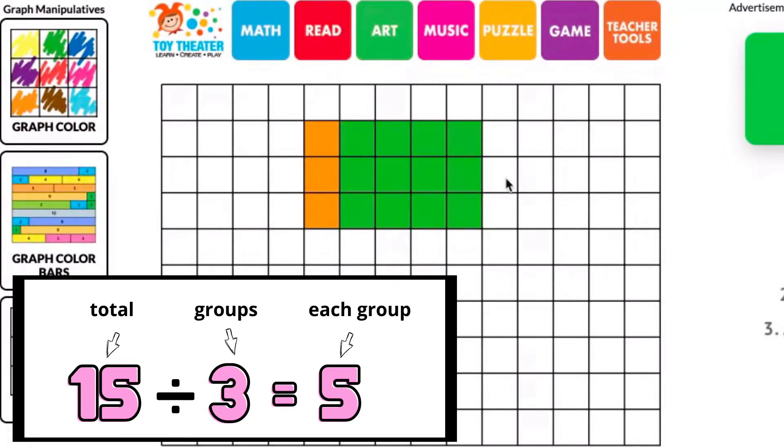So now it should look like 15 divided by 3 equals 5. Again, you have a total of 15 squares divided by 3 groups, 5 in each group.